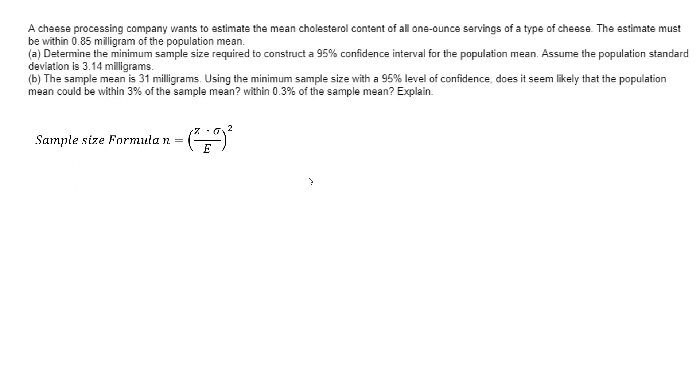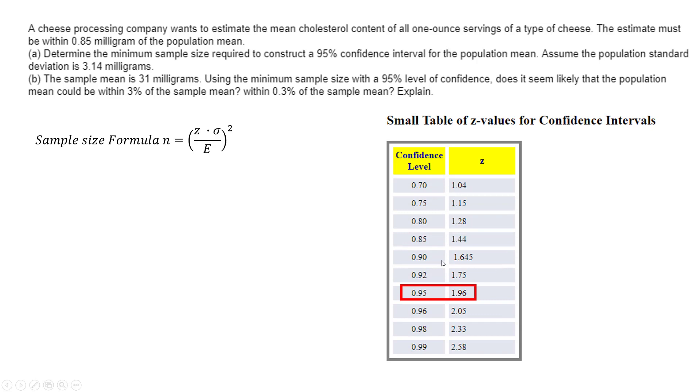So this is the sample size formula. And I can get this z value for my confidence interval of 95% and get 1.96. I plug in everything they give me, my standard deviation, my population standard deviation, my error, and I get my answer of 53.